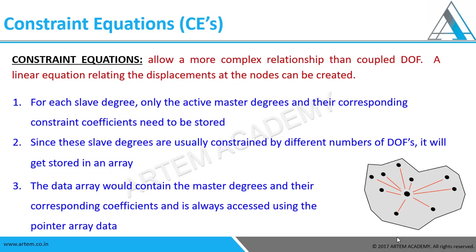Coming to the definition: a constraint equation is a more complex relation than a coupled DOF. For each node, different degrees of freedom exist. If you couple those degrees of freedom to one particular master node, that relation is called a CE. CEs are always linear equations relating to displacements — the primary variables of FEM. CE's are directly related to displacements at nodes. As you can see in the picture, from the center it is connecting to some nodes.